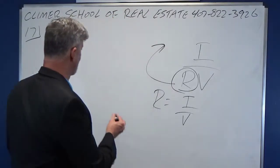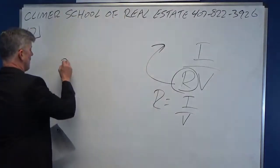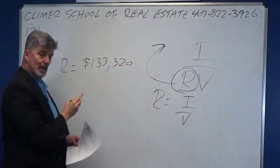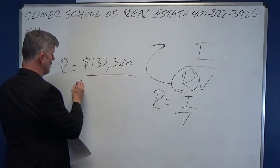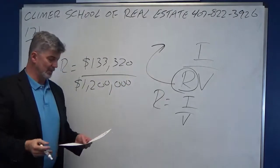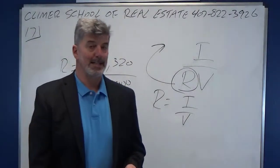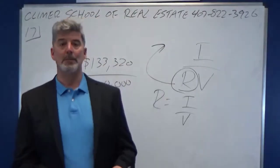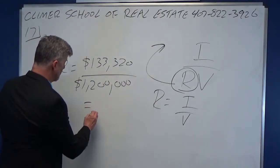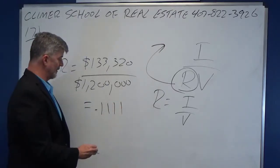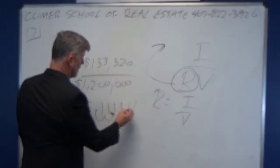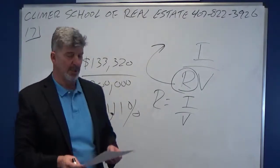So $133,320 divided by a value of $1,200,000. You have a top number divided by the bottom number. If you throw those in your calculator, you get 0.1111. And if you turn that into a percentage, it's 11.11%, or C, Charlie.